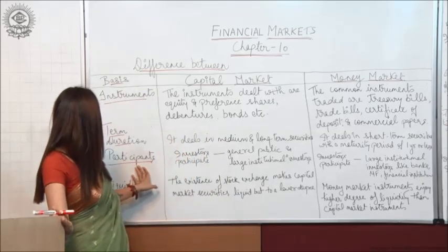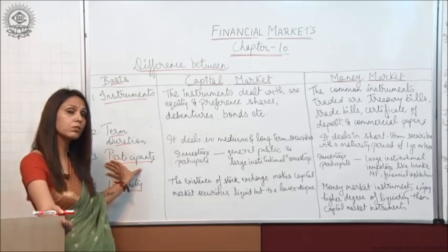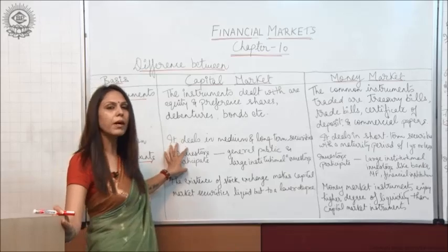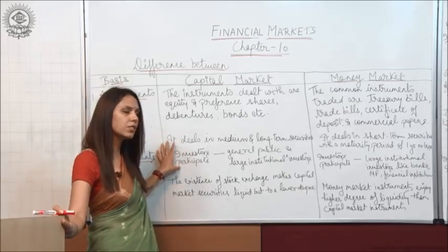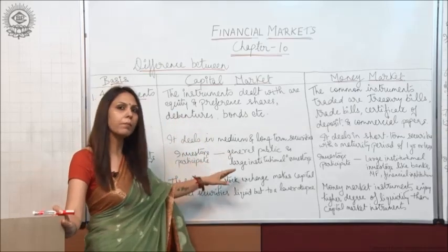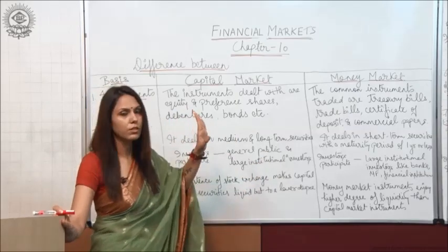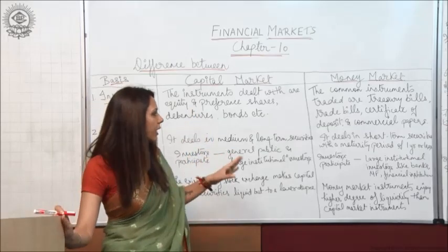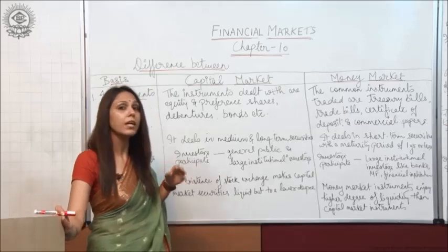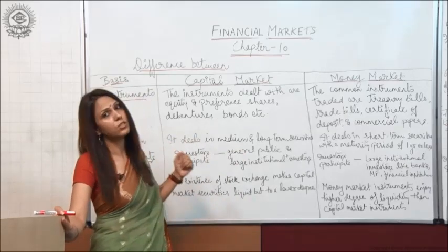The third point is participants — who are the various participants in capital market or money market? The different investors who participate in capital market are general public and large institutional investors. Whereas in money market, the investors are large institutional investors like banks, mutual fund agencies and financial institutions.